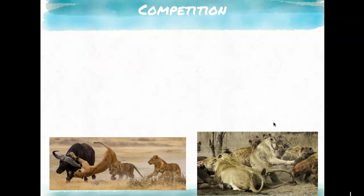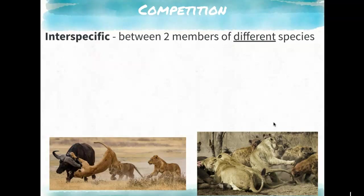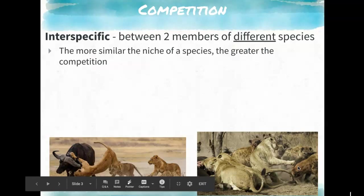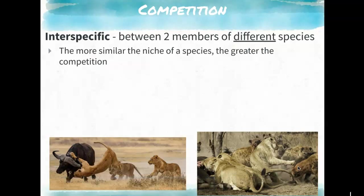Competition is another important concept — there are two types. Interspecific competition is between members of two different species. For example, lions and hyenas competing over a carcass. If they share the same niche and food source, competition is high, and whoever is better at obtaining that food will win.